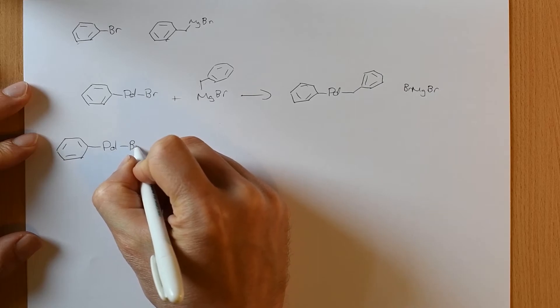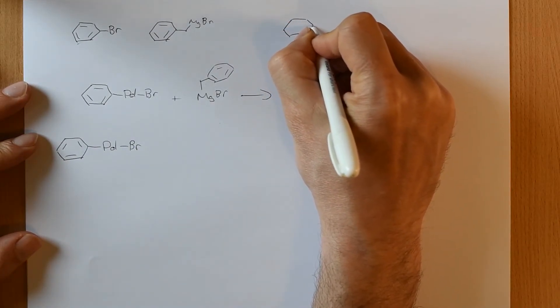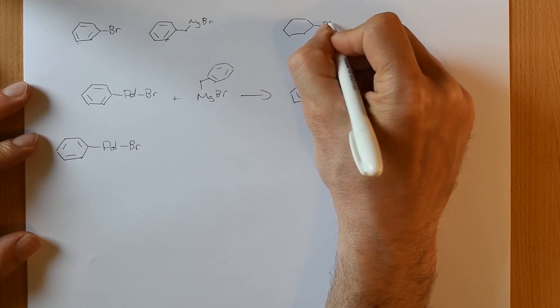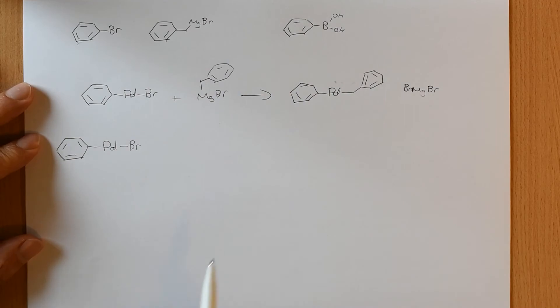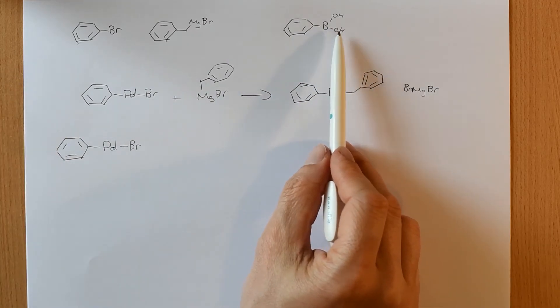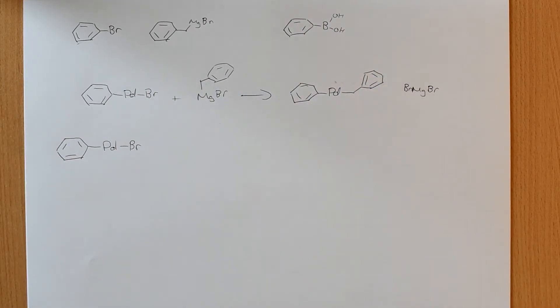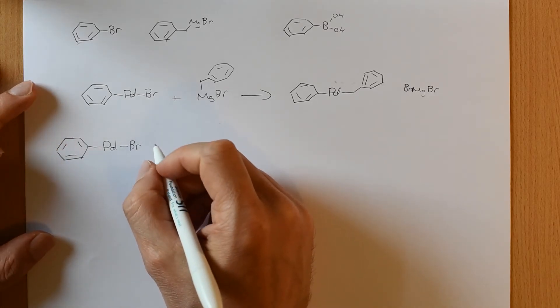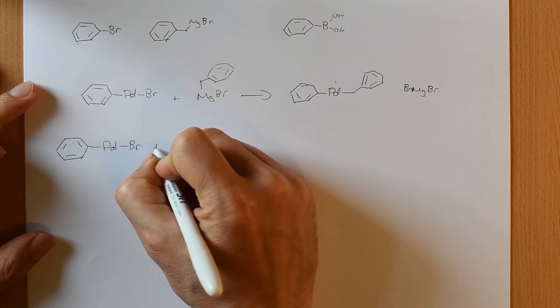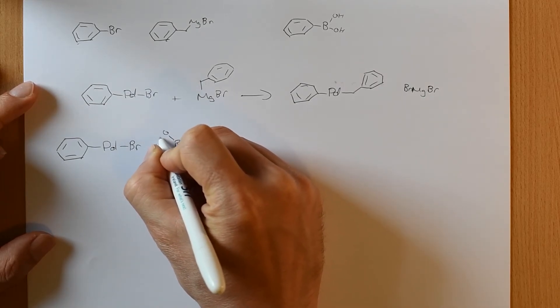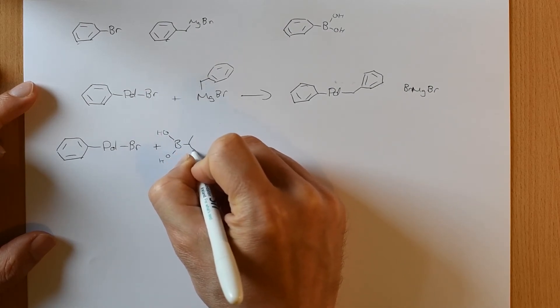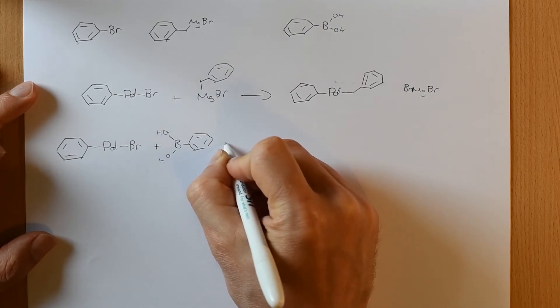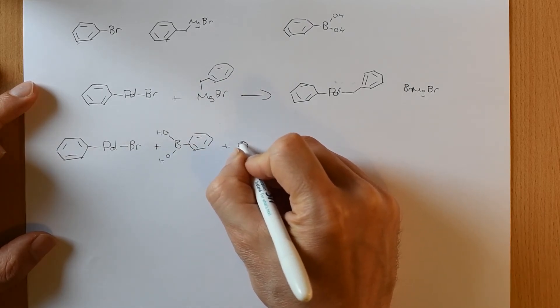But in the Suzuki coupling, we're going to use a boronic acid. Boron is definitely a metalloid at best. It's not so metallic in its properties. So this won't actually work. If you put in these two things, you won't get efficient transmetallation. So instead, what you need to do is put in a base.